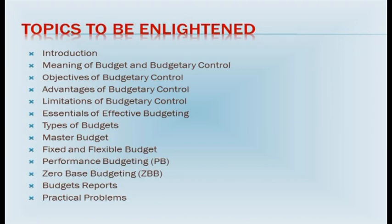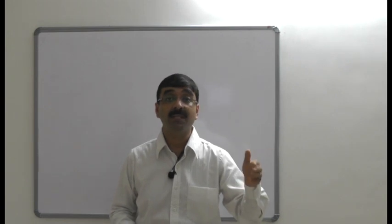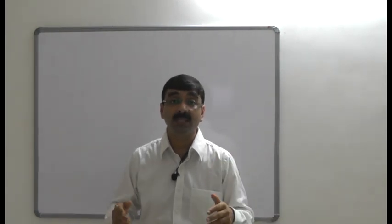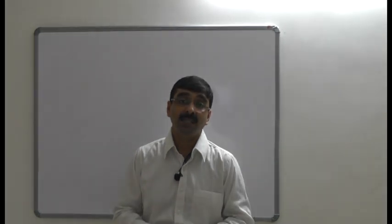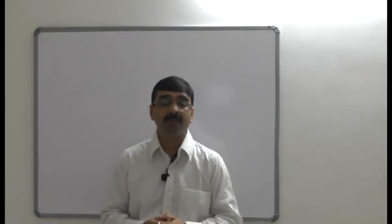The topics include: introduction, meaning and definition of the chapter title, then advantages, limitations, essentials of effective budgetary control, types of budget like cash budget, master budget, flexible budget, fixed budget, performance budgeting, zero-based budgeting, and at last, budget reports. So let's begin with the introduction part.